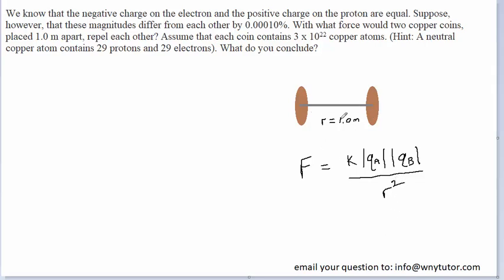Now the distance between our two objects is given to be one meter, so the r value is rather easy, and then K is a constant. The challenge here is to find the amount of charge present on each of the two coins, the QA and QB.